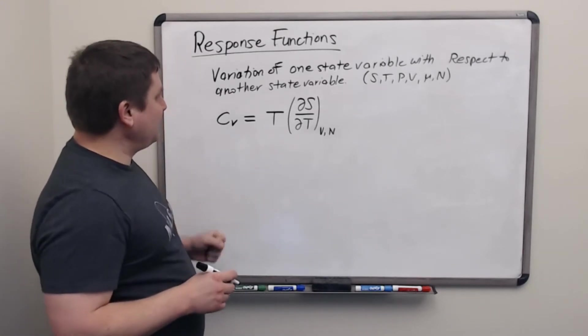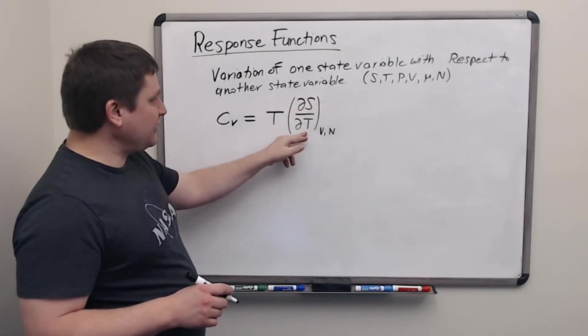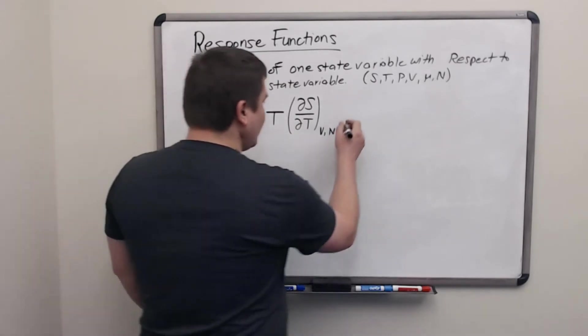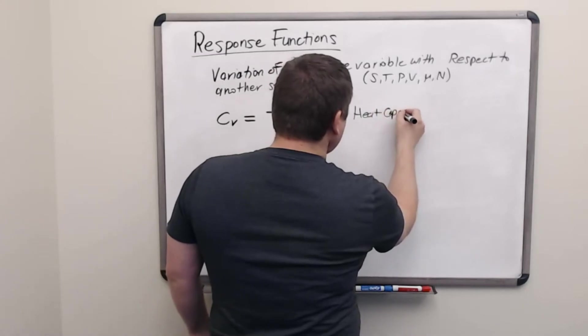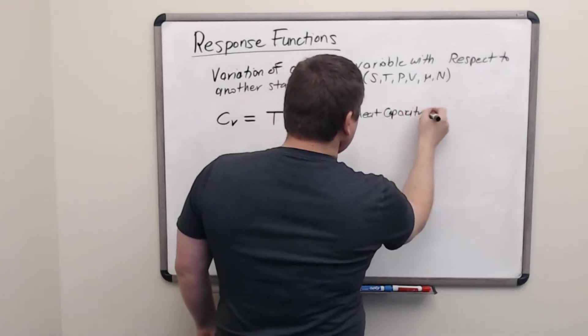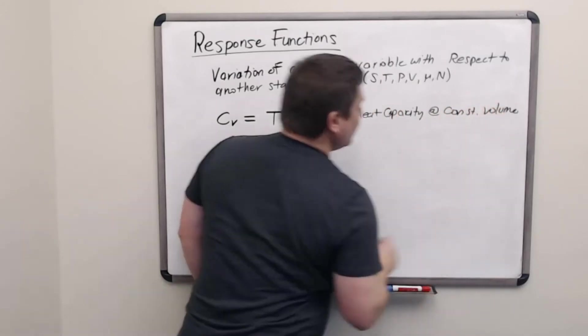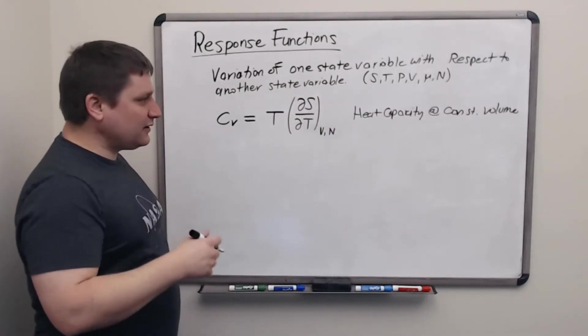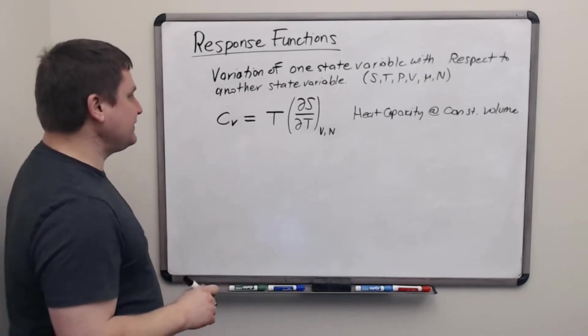And what do we have? We have a state variable changing in the numerator, a state variable changing in the denominator, and two other state variables held constant. So heat capacity at constant volume is a response function. It describes how the material system responds to the changing of one of its state variables.